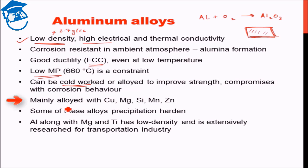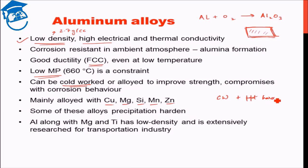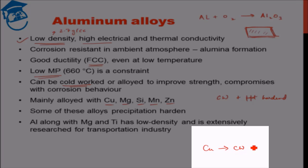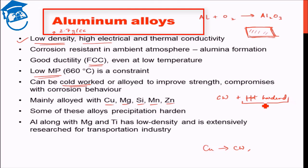Some aluminium alloys, when alloyed with certain elements, can be precipitation hardened, which allows the strength to be further increased. So aluminium can be strengthened by cold working as well as by precipitation hardening. Compared to copper — which could only be cold worked and not heat treated — aluminium alloys have the additional option of precipitation hardening as a heat treatment to increase strength.